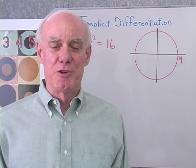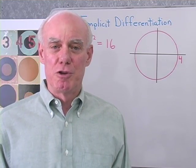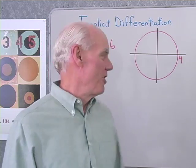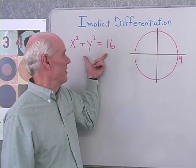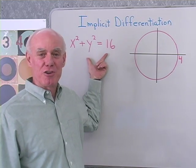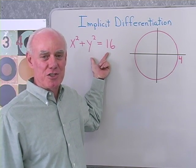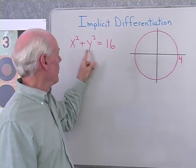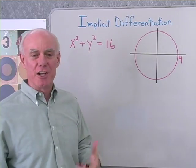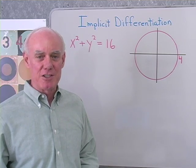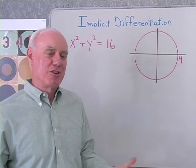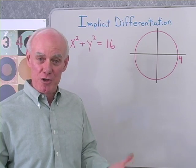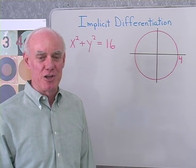We want to extend our work with derivatives to include a process called implicit differentiation. Here I've written the equation of the circle, x squared plus y squared equals 16. I want to differentiate this, but y isn't given explicitly in terms of x. So I can't do regular explicit differentiation, so what I'm going to do is called implicit differentiation.